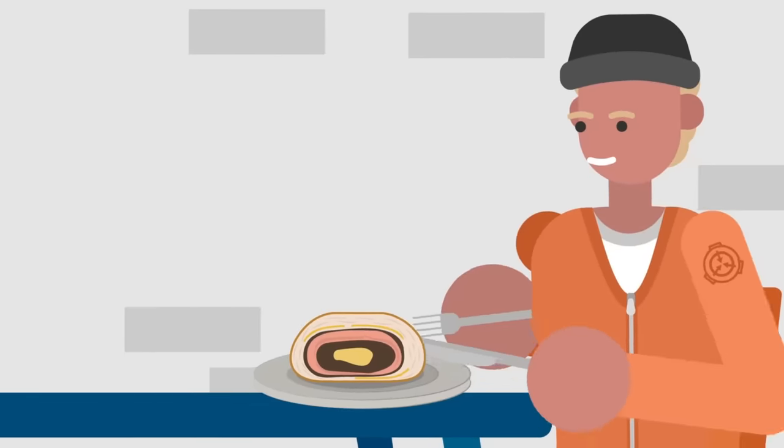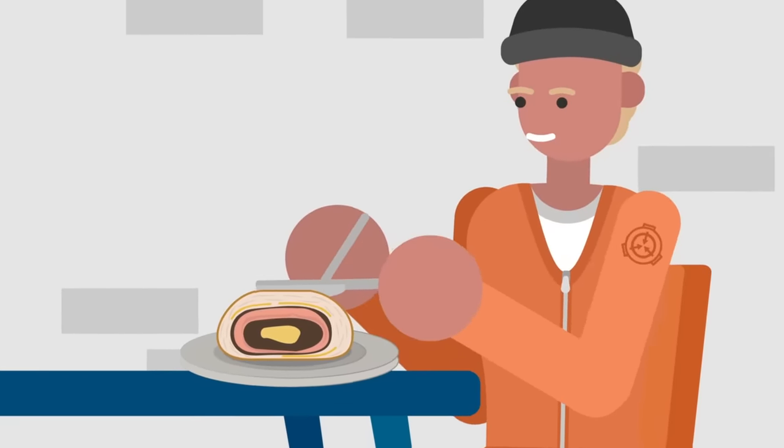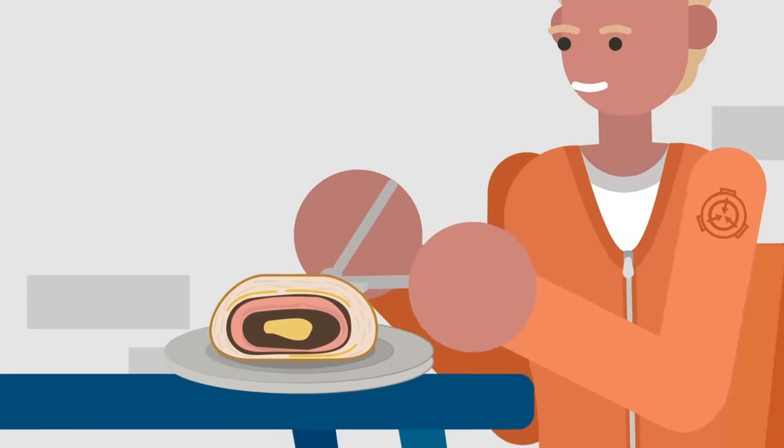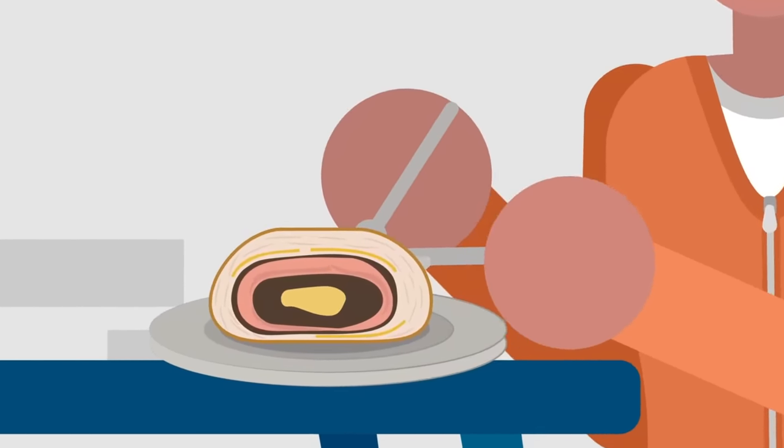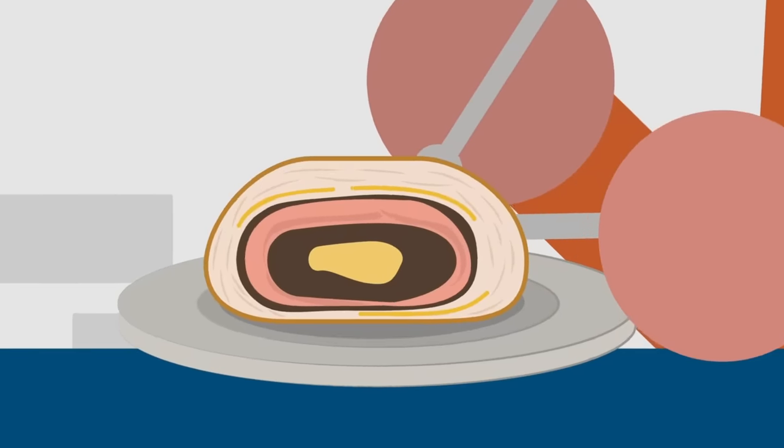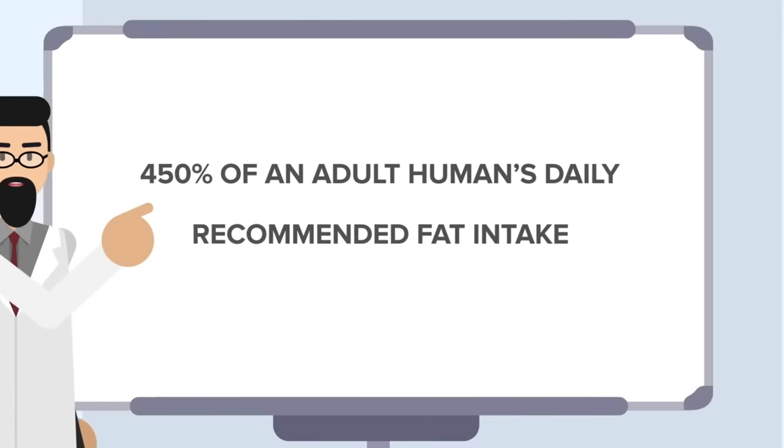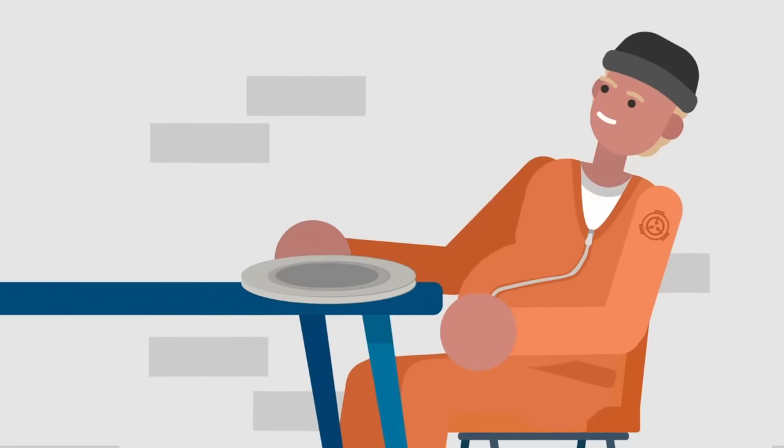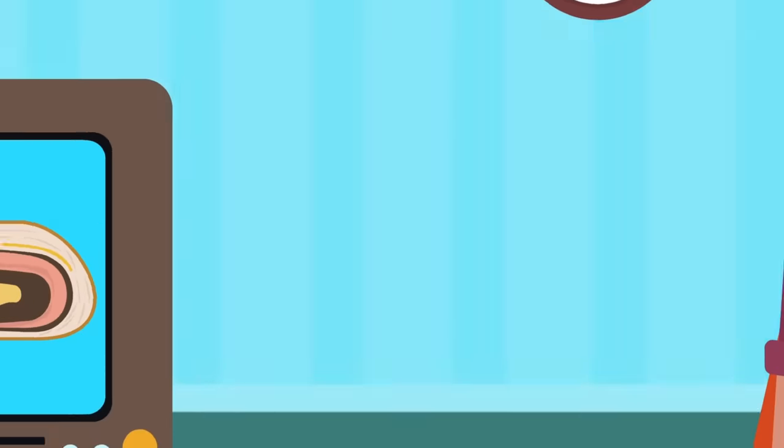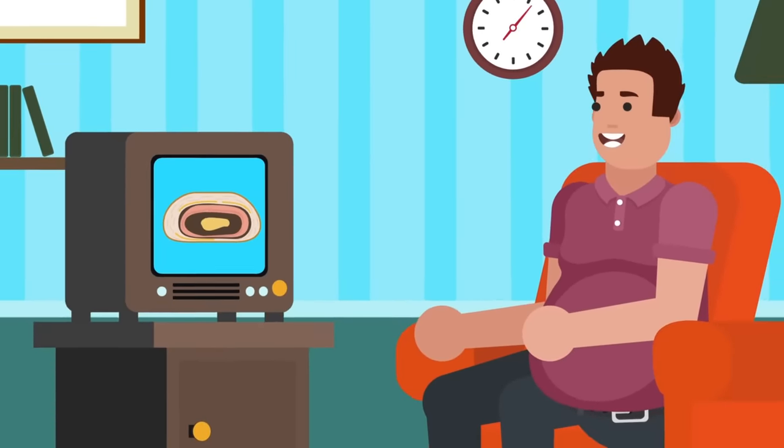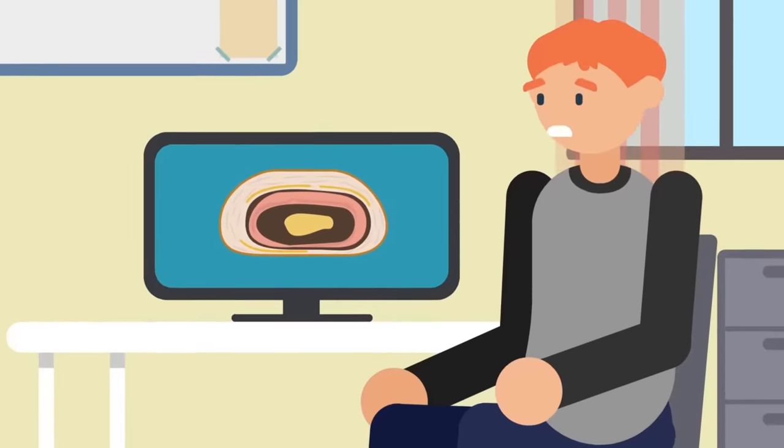Just 400 yen can net you some delicious turdokochakin. These are balls of fried turkey, filled with chocolate, a smaller ball of duck, more chocolate, and in the very center, a small ball of fried chicken. Even the labeling on the product describes it as having 450% of an adult human's daily recommended fat intake. We'll leave it to you to decide if this is a decadent treat worthy of the gods or utterly disgusting.